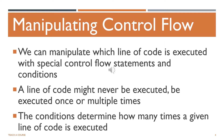We can manipulate which line of code is executed with special control flow statements and conditions. With these control flow statements, a line of code might never be executed, it might be executed once, or it might be executed multiple times. The conditions determine how many times, if at all, a given line of code is executed.